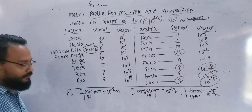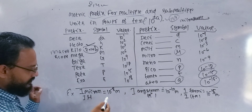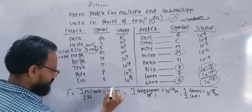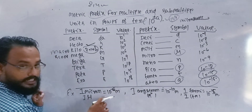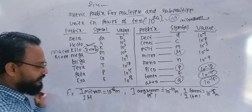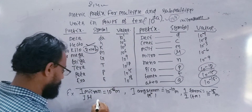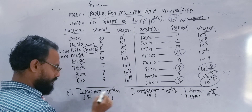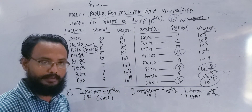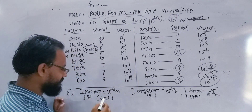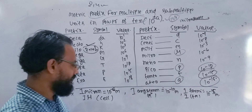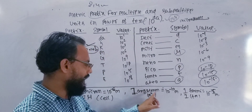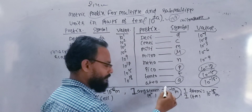1 micron means 10 to the power minus 6 meter. We actually have cells — blood cells — so we have 10 to the power of micron. We have coronavirus such as micron. 1 angstrom means 10 to the power of minus 10 meter.